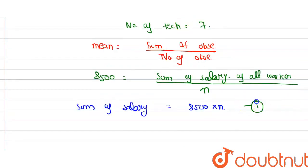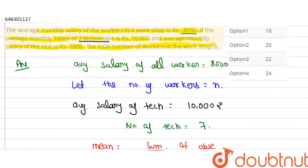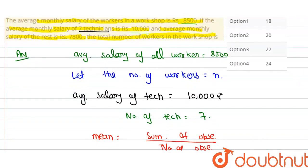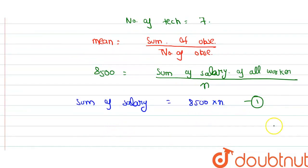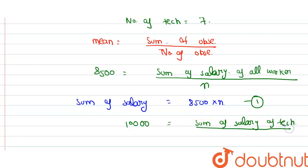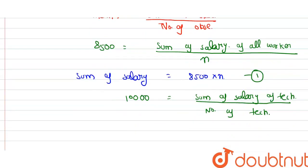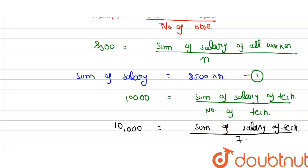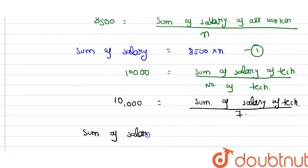अब equation number 2 में देखो — हमें given है: 7 technicians का average salary कितना है? 10,000. तो 10,000 = sum of salary of technician / 7. Sum of salary of technician हमें नहीं पता, but number of technician हमें पता है — that is 7. तो sum of salary of technician = 10,000 × 7 = 70,000.